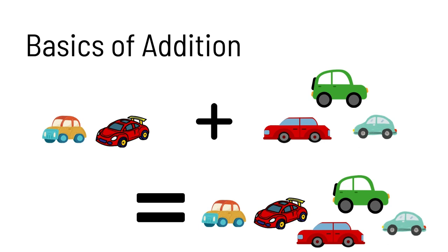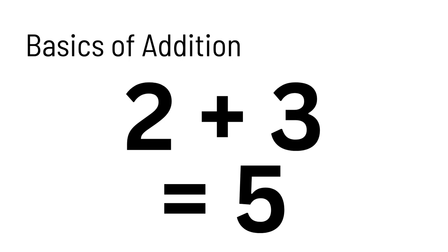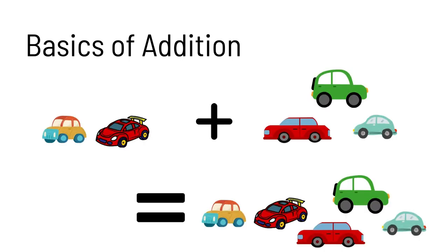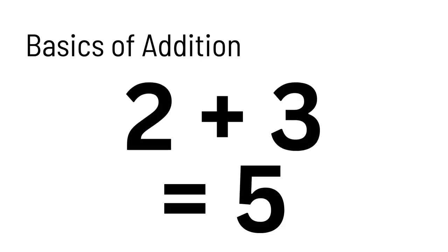In other words, if we write it with numbers, it would be 2 plus 3 equals 5. So, basically saying that you have 2 toy trucks and then someone gives you 3 equals 5 is the same thing as saying 2 plus 3 equals 5.